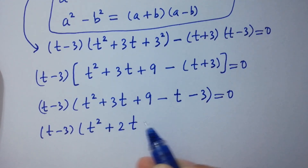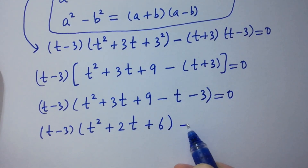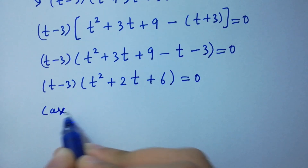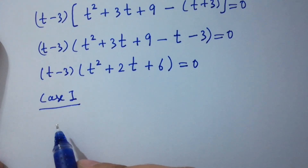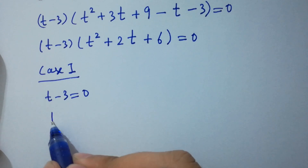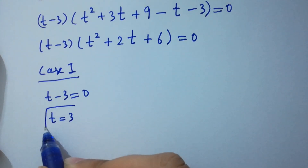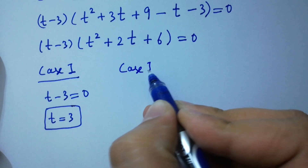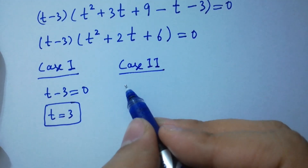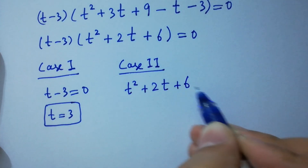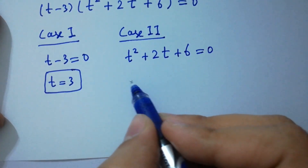This gives t minus 3 times (t squared plus 2t plus 6) equals 0. Either case one: t minus 3 equals 0, giving t equals 3, the real solution; or case two: t squared plus 2t plus 6 equals 0, which is a quadratic equation.